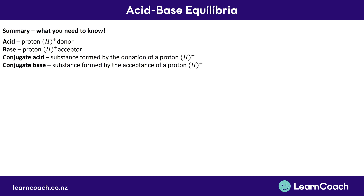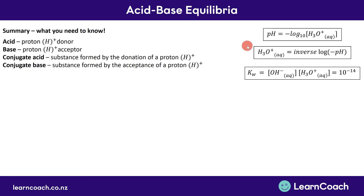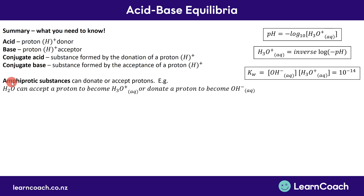Just to go over a quick summary of the things you need to know. You need to know these four basic definitions: an acid is a proton donor and a base is a proton acceptor. Every base has a conjugate acid — it turns into its conjugate acid after it has accepted H⁺. Every acid turns into its conjugate base after it has donated its proton. You need to know these three equations: pH equals the negative log of H₃O⁺; the concentration of H₃O⁺ equals inverse log of negative pH (the inverse log button is found by pressing shift-log on your calculator); and KW is the equilibrium constant for water, always equal to 10 to the negative 14.